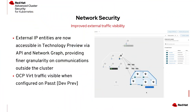ACS 4.6 introduces the External IPs feature in Technology Preview, providing visibility into external entities communicating with your cluster fleet. This information is accessible via the API and the Network Graph, which now supports clusters running OCP Vert in PAST mode.